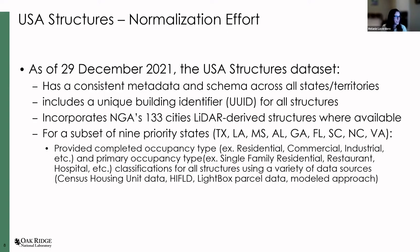We're also incorporating NGA's 133 cities LiDAR-derived structures where available. For a subset — those nine priority states, which are the most hurricane-prone states — we provided occupancy type: is this a residential structure, commercial, industrial? And also primary occupancy: is this single-family residential or multifamily? Is it a restaurant or a hospital? That type of information for all structures using a variety of data sources.